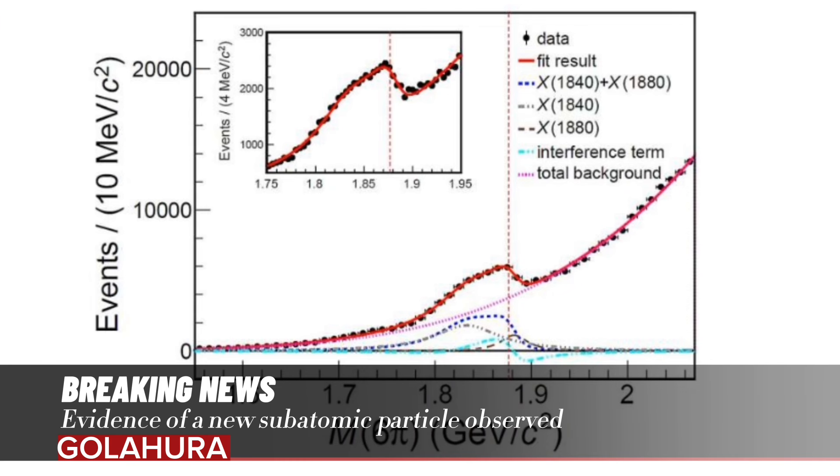The anomalous line shape of the resonant structure around p-pbar mass threshold in 3(π+π-) mass spectrum. Credit: Physical Review Letters, 2024, 210103/PhysRevLett.132.151901.